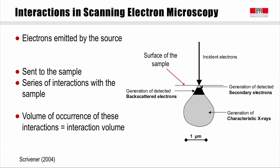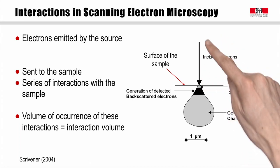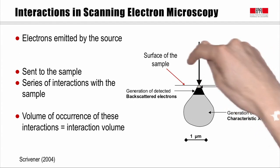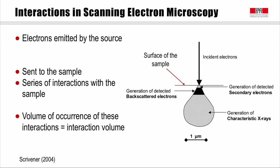In a scanning electron microscope, electrons are emitted from the electron source, they pass through a series of lenses which focus them, and then the electrons reach the surface of the sample. They undergo a series of elastic and inelastic collisions with the atoms of the sample. Different signals can be collected from these collisions. In a scanning electron microscope, the surface of the sample is analyzed point by point, and the final image is the assemblage of the information from all these points.